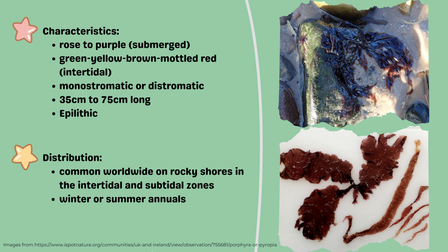The adult Porphyra could grow up to 35 to 75 cm long, with rose to purple color when submerged, and mottled red to green or brown in intertidal zones. Its thallus could either be single-cell thick or monostromatic, or it could be distromatic, or two cells thick. Also, the blade cells of some species have only one plastid, but others could contain two.